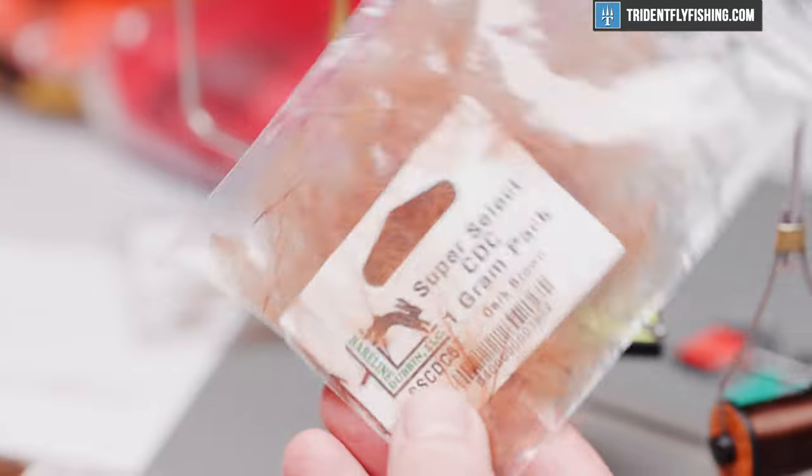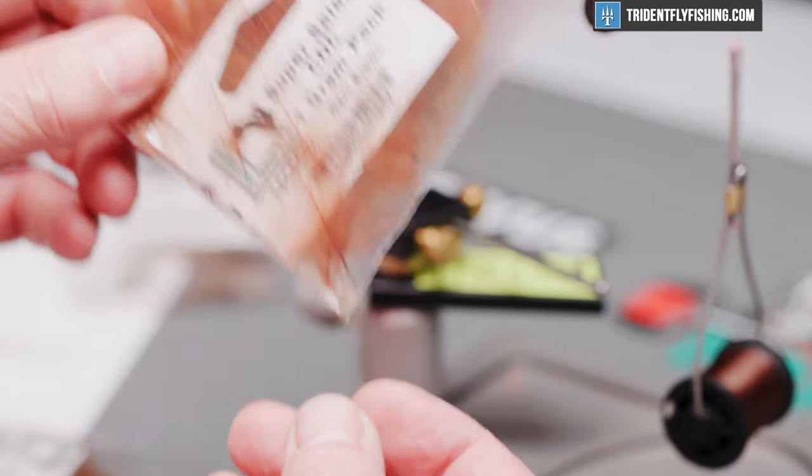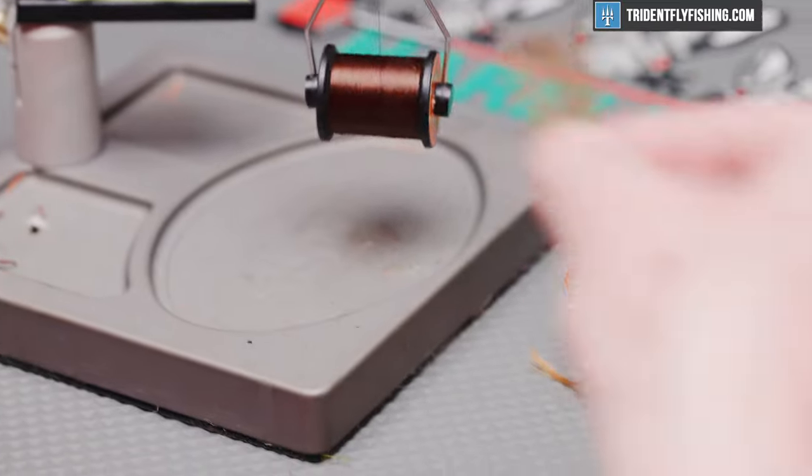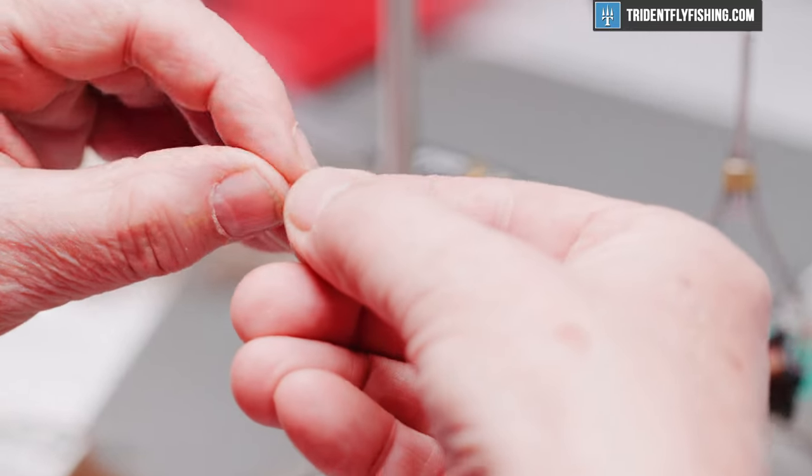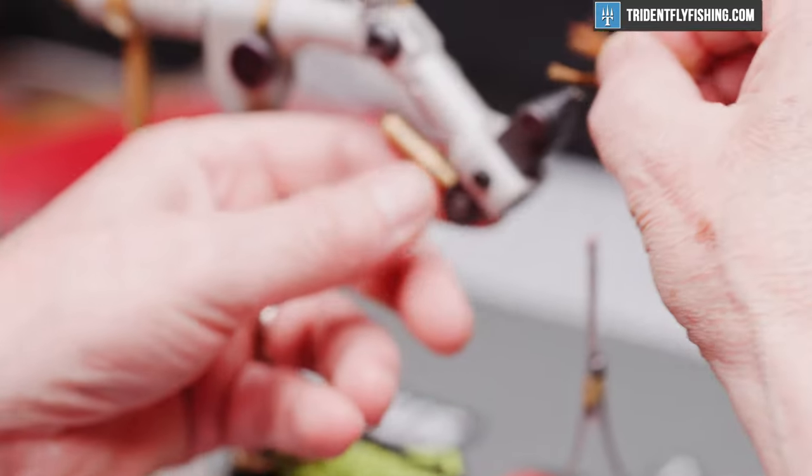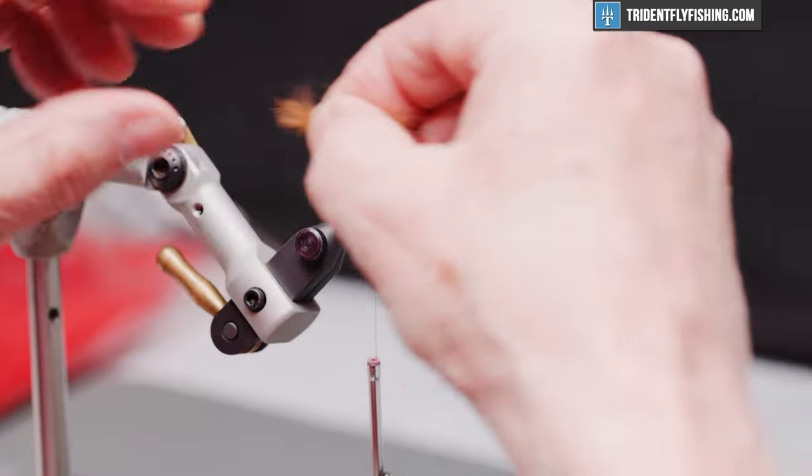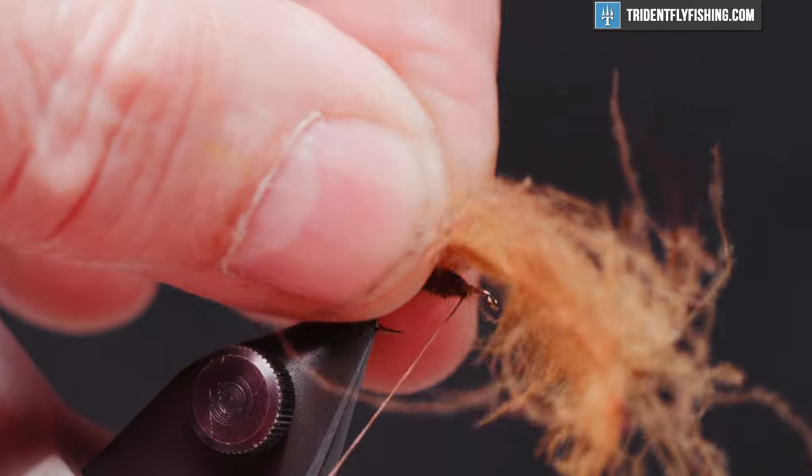For the wing of the fly, we're going to use some hairline CDC. This is in a dark brown—it's actually not all that dark, kind of a tan color. I've selected three feathers. We're going to stack them one right on top of the other and we're just going to use the tips. The wing is relatively short; it only extends back to the bend of the hook. So we'll tie those in on top.